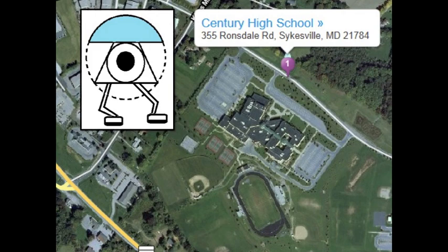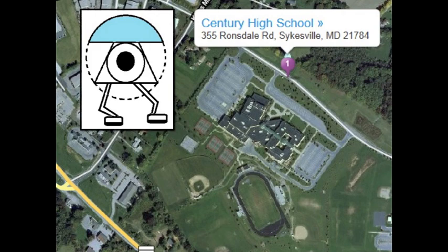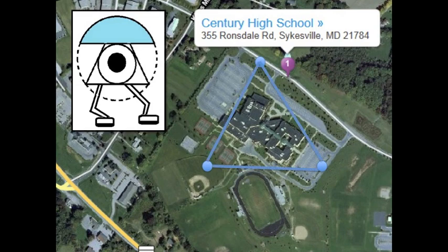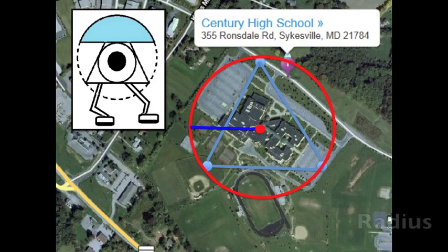Taking a look over Century High School, we can use the three places where the circumcenter has last been seen to construct a triangle. By drawing a circle around the triangle and connecting all three vertices, you can find the location of the circumcenter. The radius and the diameter can be used to find the center of the circle.